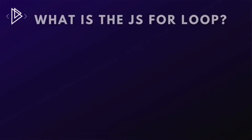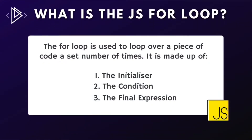The for loop is best suited for scenarios where we want to do things a fixed number of times — for example, rolling a die a specific number of times. Let's understand how it works and how to write the for loop.